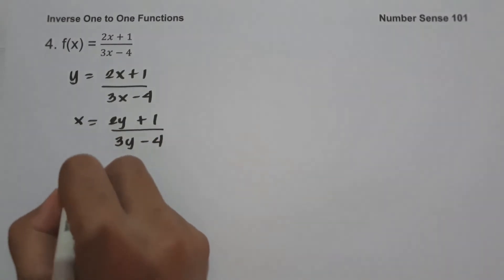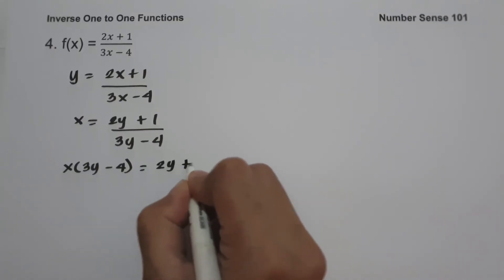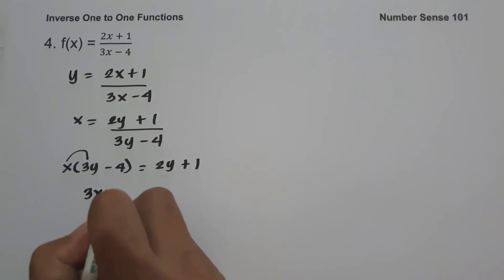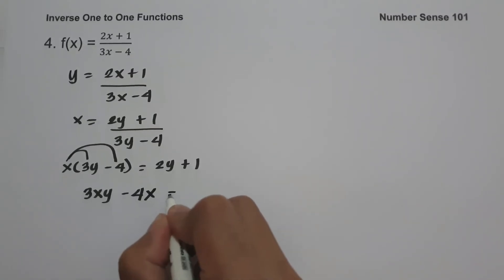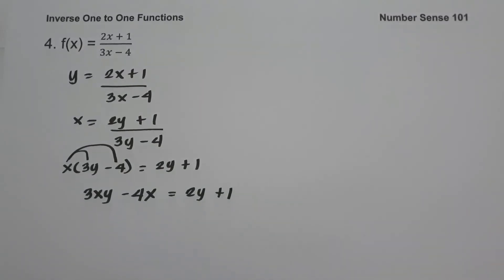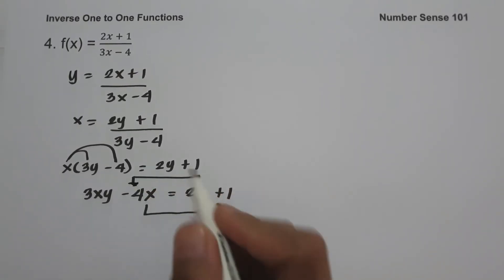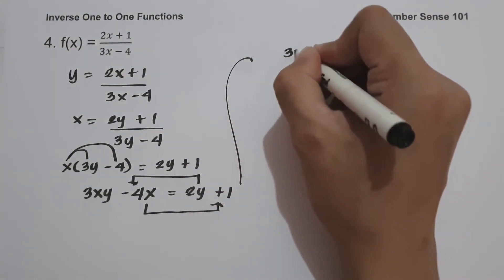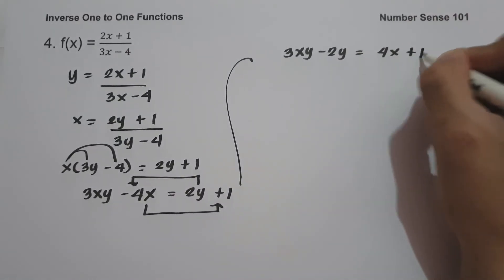Multiply x by (3y - 4) to get 2y + 1. Expanding: x·3y = 3xy and x·(-4) = -4x, so 3xy - 4x = 2y + 1. Since we are solving for y, move -4x to the other side and move 2y to the other side, giving 3xy - 2y = 4x + 1.